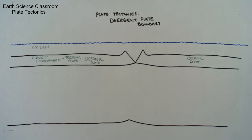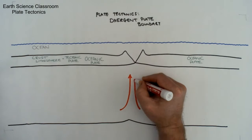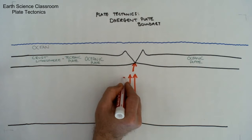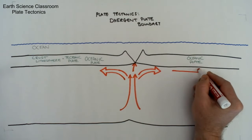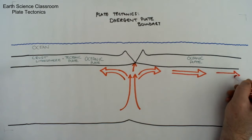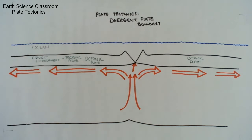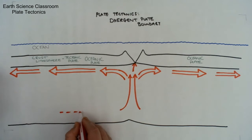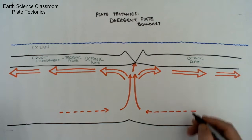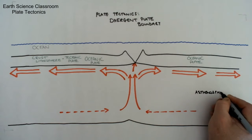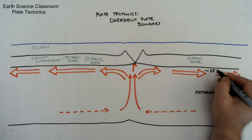Here we have a divergent plate boundary, part of the plate tectonic series, and it's also called a constructive plate boundary because this is where new oceanic plate is being created. We have the convection currents, which is the mechanism for movement of the plate above — the crust and lithosphere — and the ocean is sitting on top of this oceanic plate. This is happening in the asthenosphere, which is plastic and has flow.